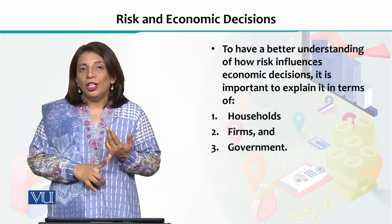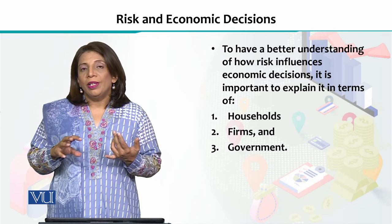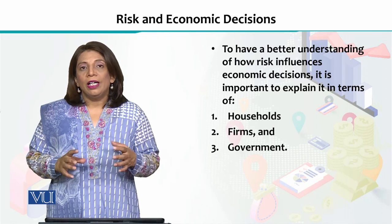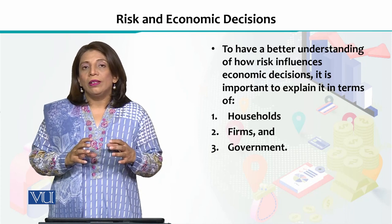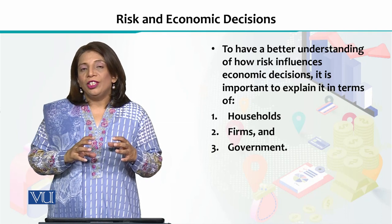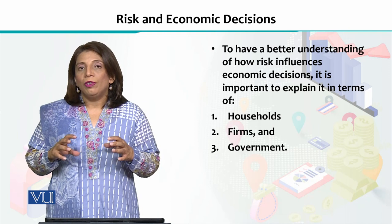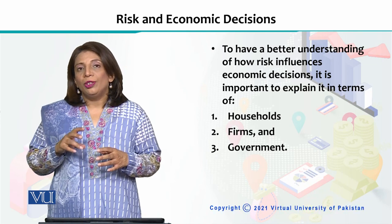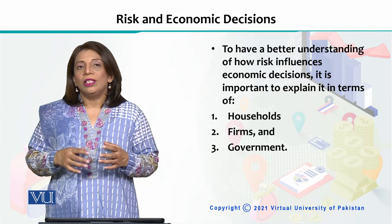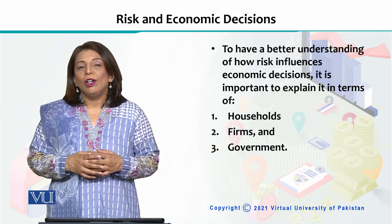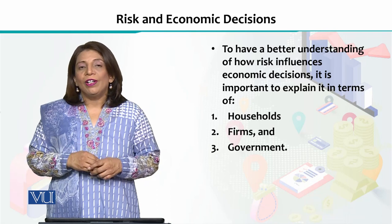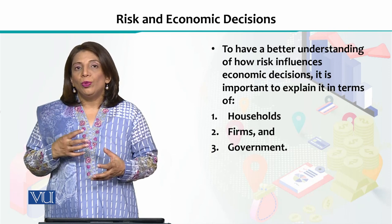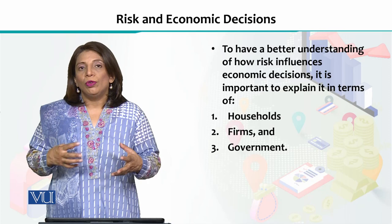First, we will see how the economic decisions of households are going to be affected by any kind of risks. Then there are the different kinds of institutions — specifically, we can look at the effect of economic decisions made by firms and how different kinds of risks can influence those decisions. Thirdly, when the government takes any economic decisions, we need to understand what kinds of risks will be faced, how negative effects can be mitigated, and how positive effects can be enhanced, so that the smooth running of the economy is facilitated.